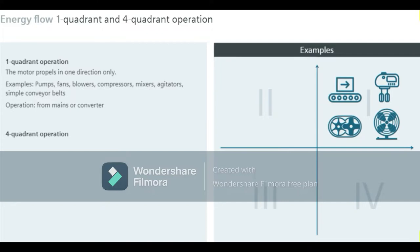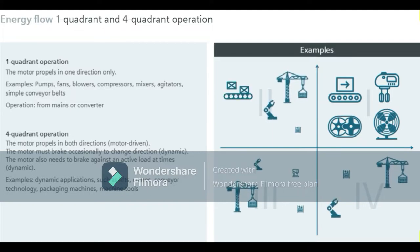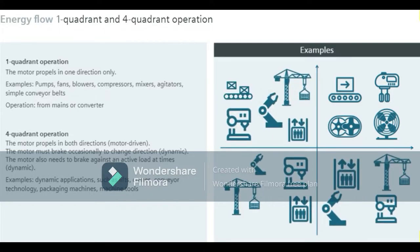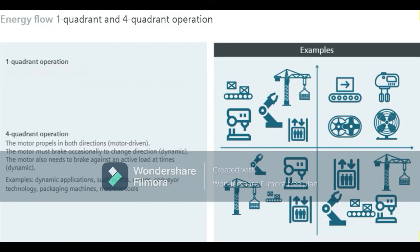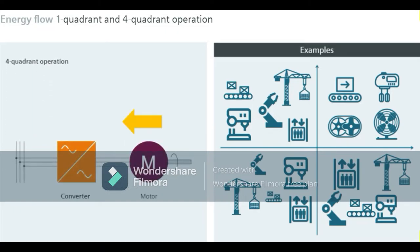In four-quadrant operation, the motor switches directions in motor-driven mode and sometimes operates dynamically. Examples of such operation are most dynamic applications such as lifts, cranes, converter technology, packaging machines, machine tools, and many more. These requirements are almost always met with converters. However, electric energy flows back into the converter during dynamic operation, and the intermediate circuit capacitor can only absorb energy to a certain extent. You will learn how to overcome such circumstances on the next few slides.